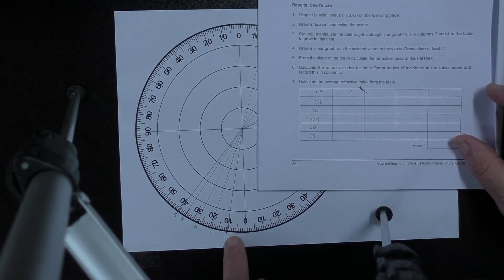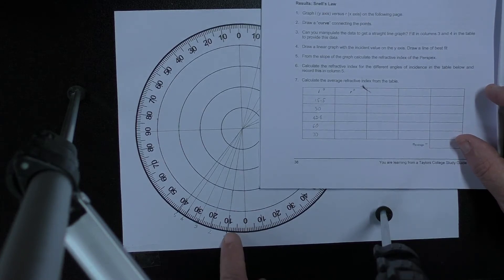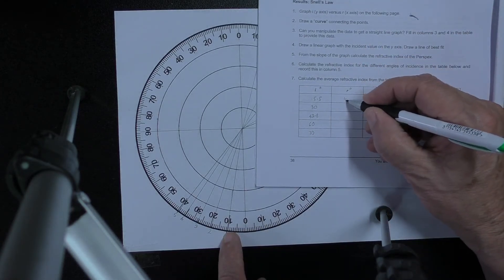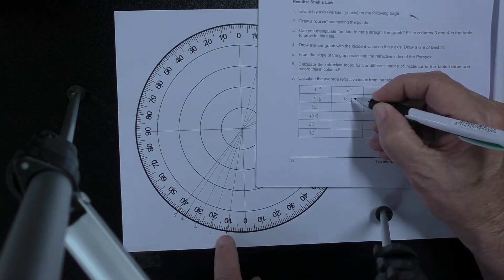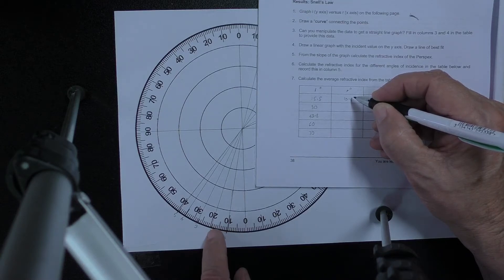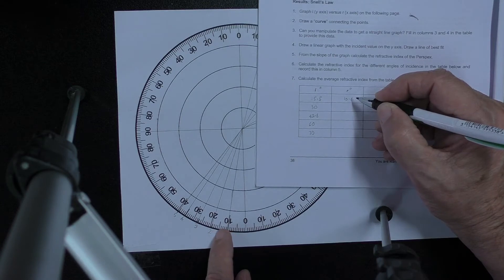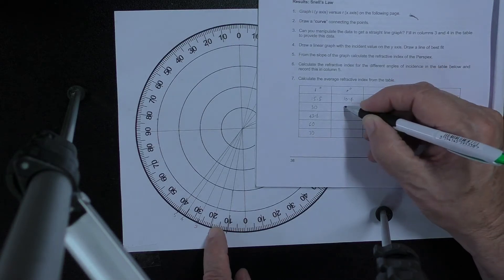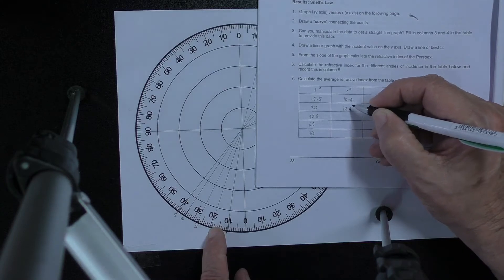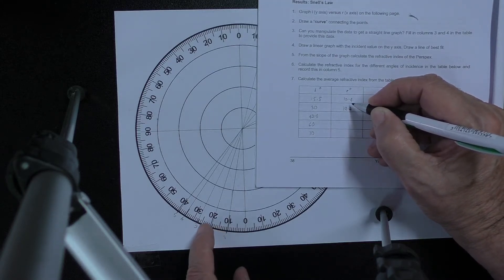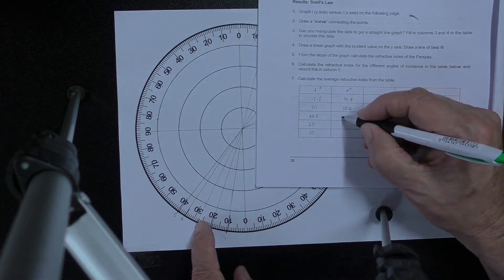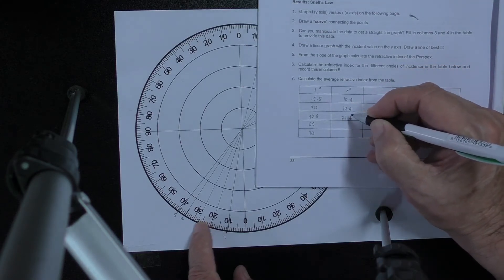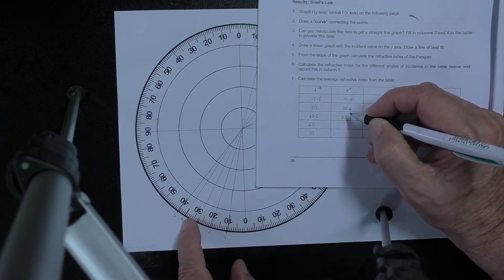Now over here for the first one is slightly more than 10, so maybe 10.3 or 10.4. I'm going to write here 10.4. And next is around 19 and a little bit, so maybe 19.4. Then after that is 25, 27.4 again.